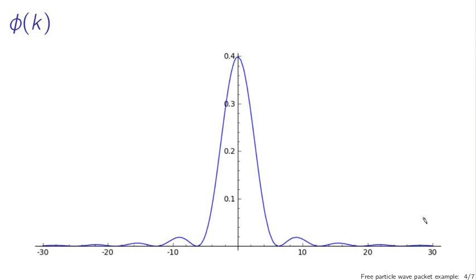Here's what that looks like. This is phi of k as a function of k, or phi as a function of k. So our x-axis here is k and our y-axis is phi of k.